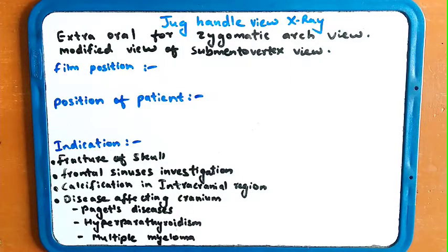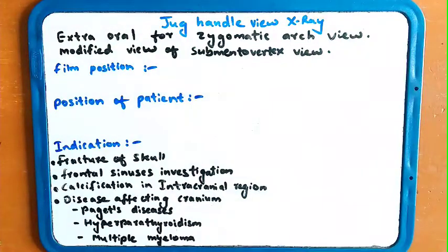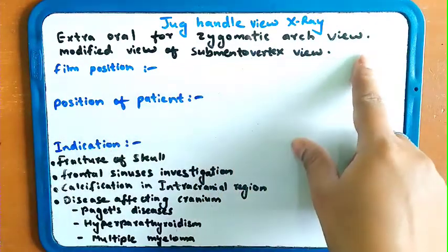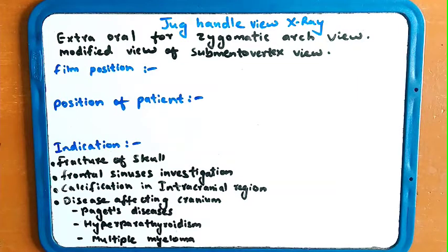Today we are going to see about the jug handle view of X-ray. What is jug handle view? The X-ray you are going to take is extra-oral — extra-oral means from outside the oral cavity. It is taken for the zygomatic arch view, to view the zygomatic arch which is present on both sides of the skull. For the zygomatic arch view, we do this jug handle X-ray.